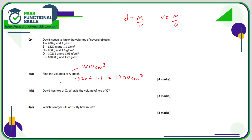David has 2 of C, so he has 1600 grams of C. What is the volume of 2 of C? We need to work out the volume - the density remains the same, so it's 1600 divided by the density of 1.6. And 1600 divided by 1.6 is 1000 cubic centimetres.